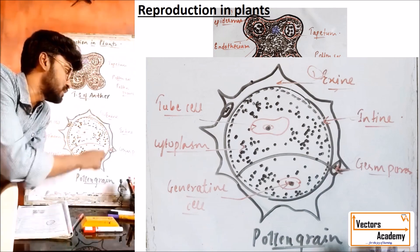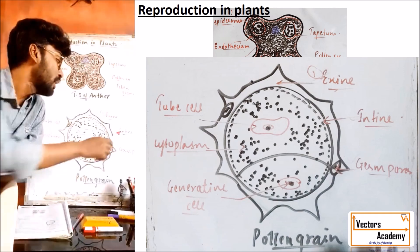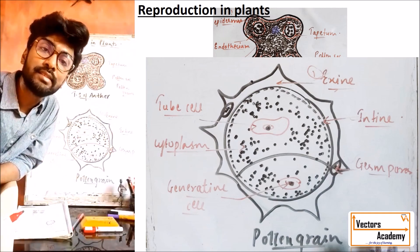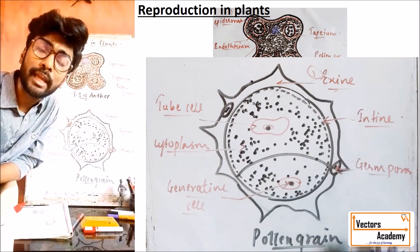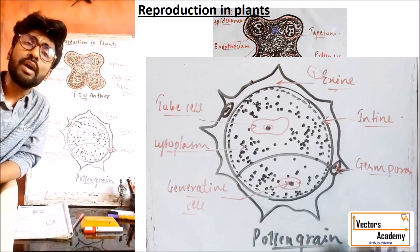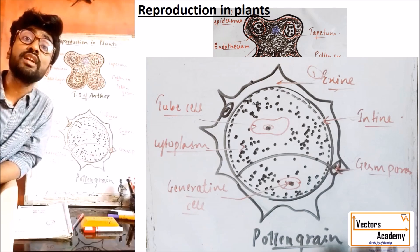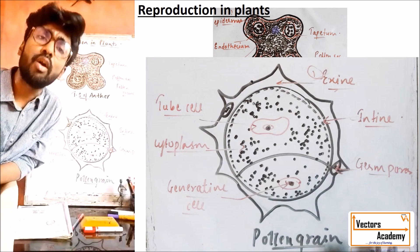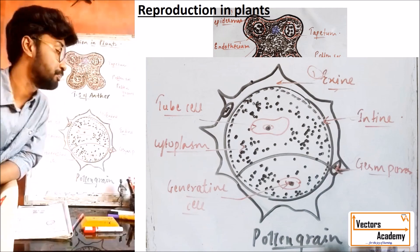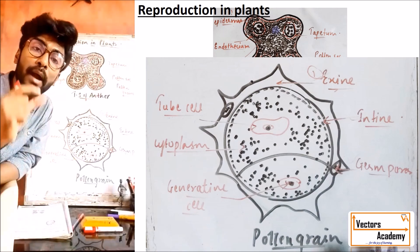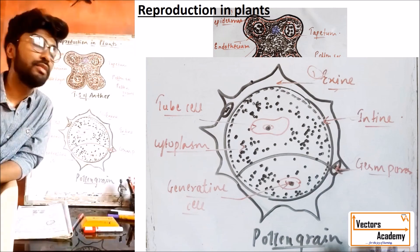Exine is the outermost thick and rough layer of the pollen grain, whereas intine is the innermost thin and smooth layer. The exine is generally made up of a very important chemical component called sporopollenin. Sporopollenin plays an important role in preventing the physical and biological degradation of the pollen grain. Exine also contains minute apertures called germ pores, which play an important role in the formation of the pollen tube.